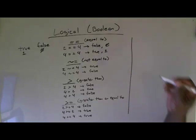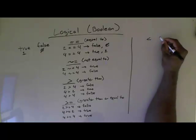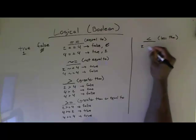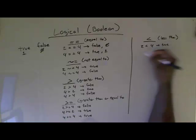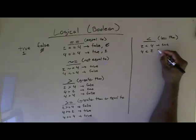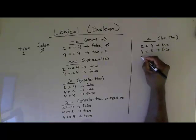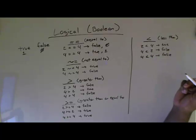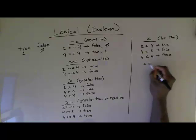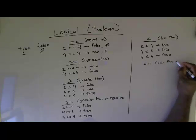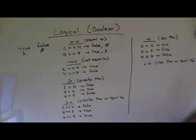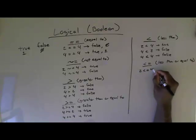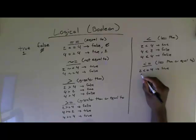You also have less than. Is two less than four? That's true. Is four less than two? That's false. Is four less than four? That's false. And then you have less-than-or-equal-to: is four less than or equal to four? That's true.